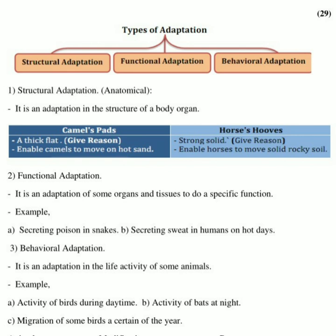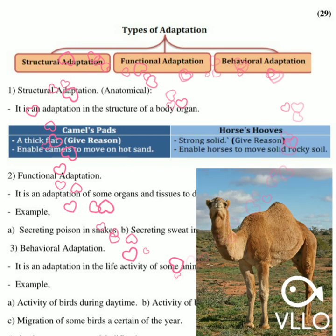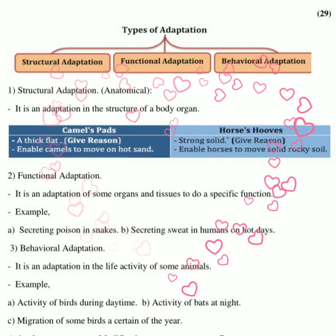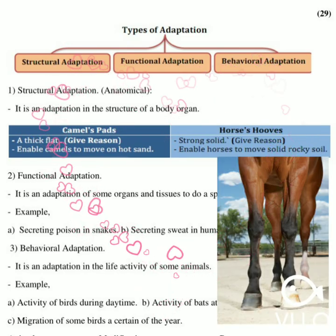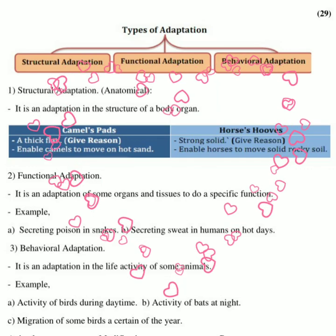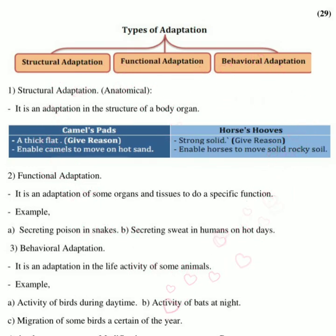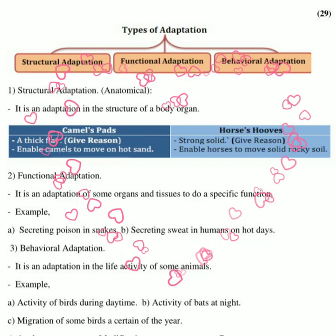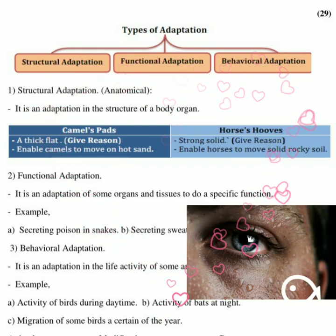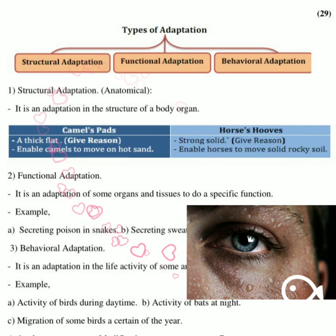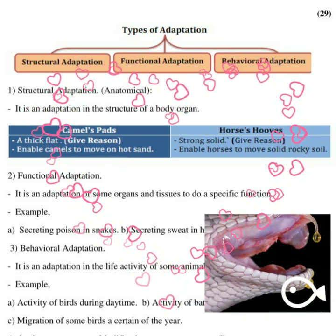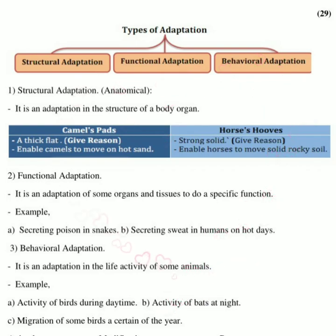Structural adaptation, also called anatomical adaptation, is used to face environmental changes. For example, camel feet are thick and flat to move on hot sand. Horses have strong solid hooves to move on rocky soil. Functional adaptation involves organs performing specific functions, such as secreting sweat in humans on a hot day, or secreting poison in snakes.